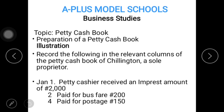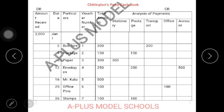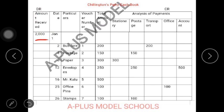January 1: the petty cashier received an impressed amount of 2,000. Now let's see the effect — they received on the first day of January, which you have on your debit column of the petty cashbook as amount received. That amount received, which is 2,000, will be recorded under that column on January 1, which is the date.